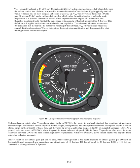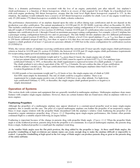Rate of climb is the altitude gain per unit of time, while climb gradient is the actual measure of altitude gain per 100 feet of horizontal travel, expressed as a percentage. An altitude gain of 1.5 feet per 100 feet of travel is a climb gradient of 1.5%. There is a dramatic performance loss associated with the loss of an engine, particularly just after takeoff. In a hypothetical twin with each engine producing 200 thrust horsepower, assume total level flight thrust horsepower required is 175. The airplane would ordinarily have a reserve of 225 thrust horsepower available for climb. Loss of one engine would leave only 25 thrust horsepower available for climb — a drastic reduction.